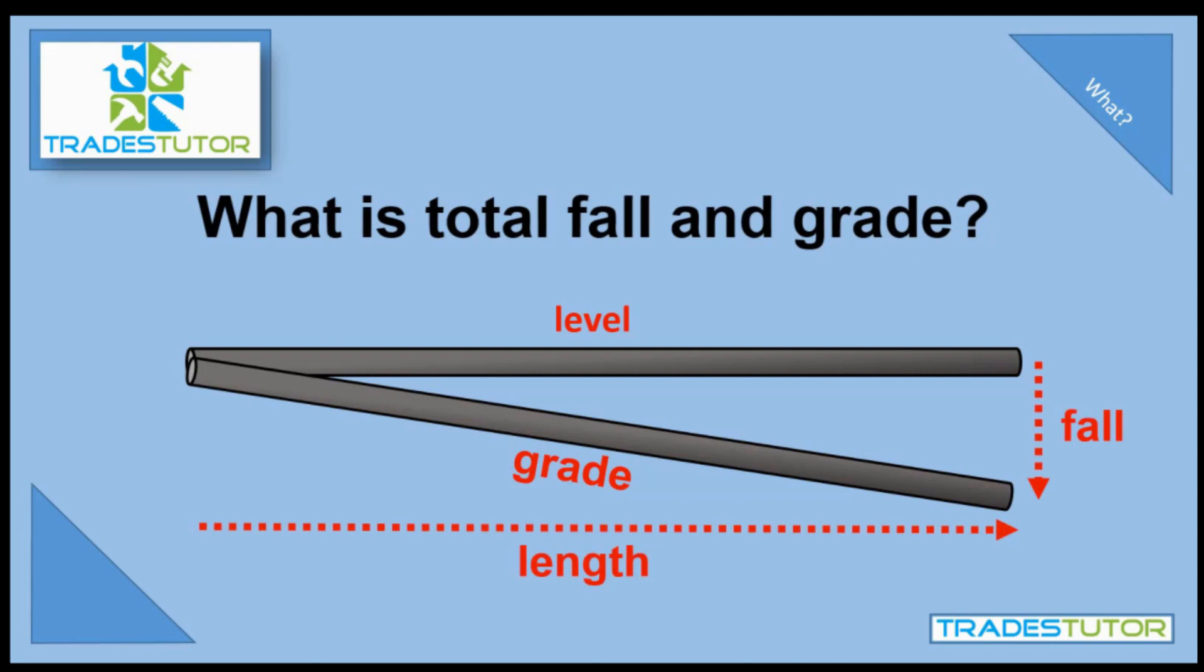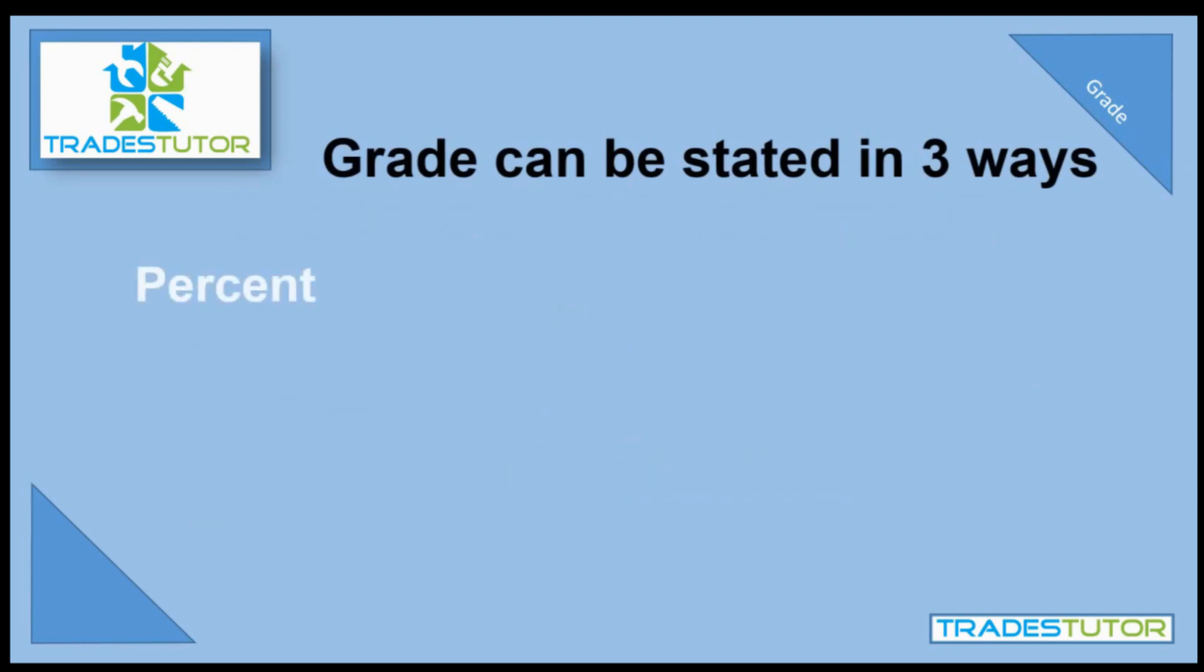All right, so what do we got to get to first? Well, let's talk about the grade. It can be stated in three ways. The first way is the percent. So you can have one percent, two percent, four percent, anything in between, anything you want. 1.5, 2.5, whatever you want, whatever works for you. And what it means is that as the pipe goes a certain distance, it falls one percent or two percent of the distance that it travels.